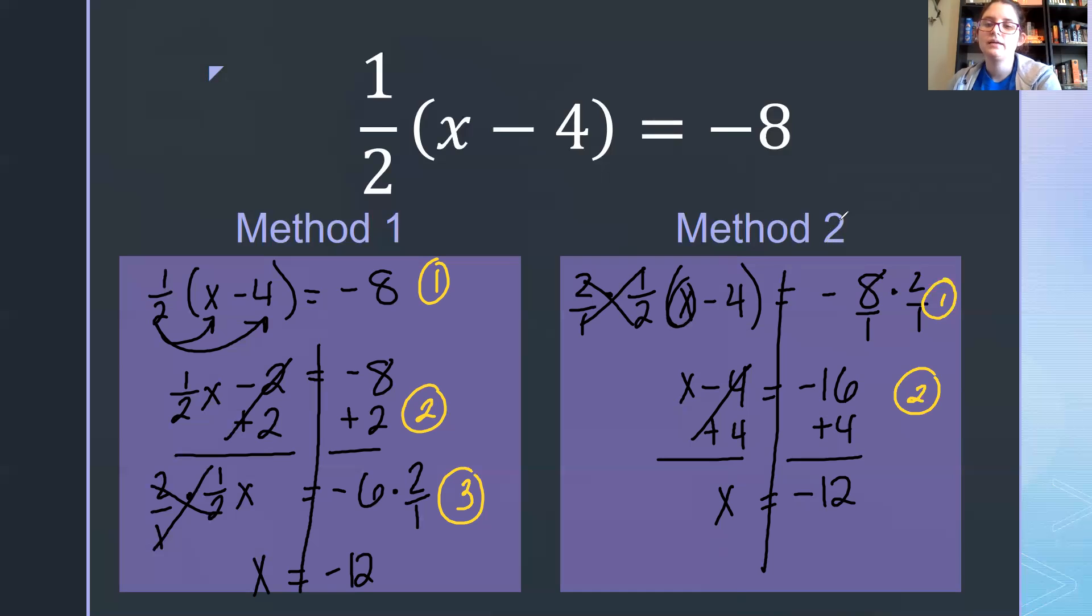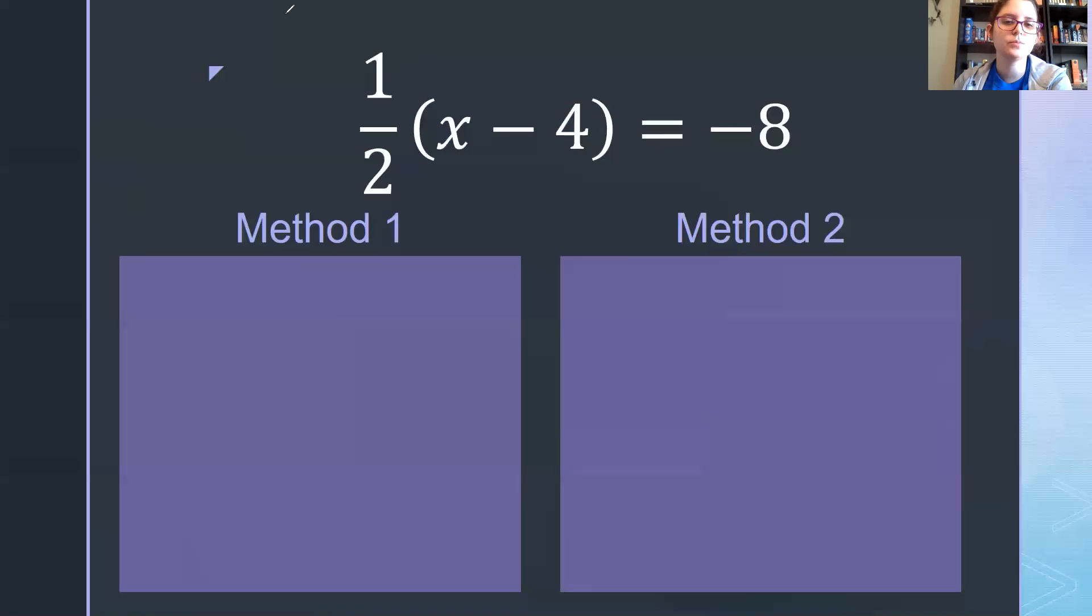The other reason why I like the second method is it's less work. And less work means less time spent on one problem. So I'm going to continue with the next two using this second method. Again, if you prefer the first method, work out the first method while I'm using the second method and see if you get the same answer. Just because we take different paths doesn't mean we don't arrive at the same answer. Okay, so let's look at our last two examples.